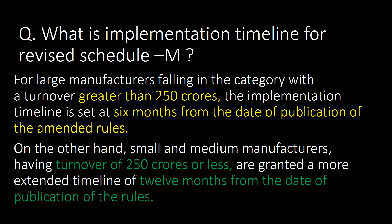What is the implementation timeline for Revised Schedule M? For large manufacturers with a turnover greater than 250 crores, the implementation timeline is set at 6 months from the date of publication of amended rules. Small and medium manufacturers having a turnover of 250 crores or less are granted a more extended timeline of 12 months from the date of publication of rules.